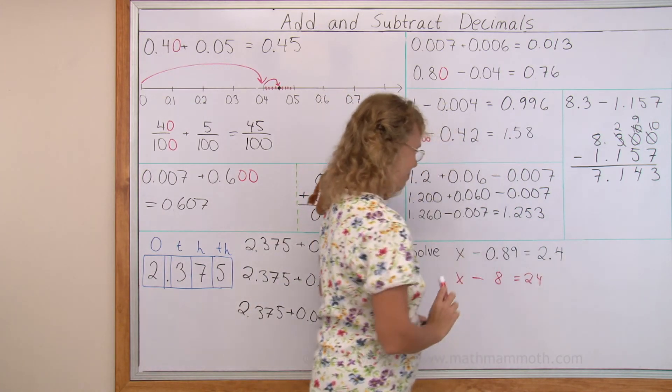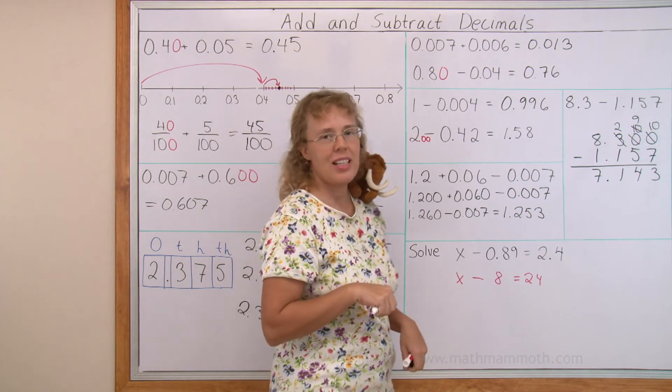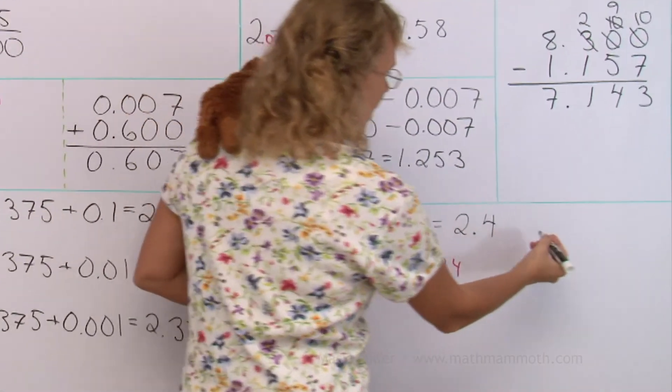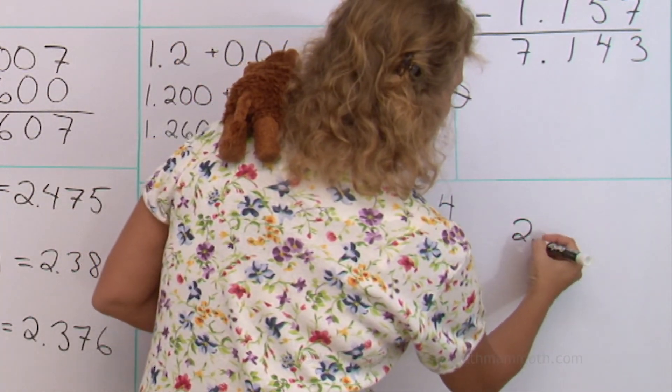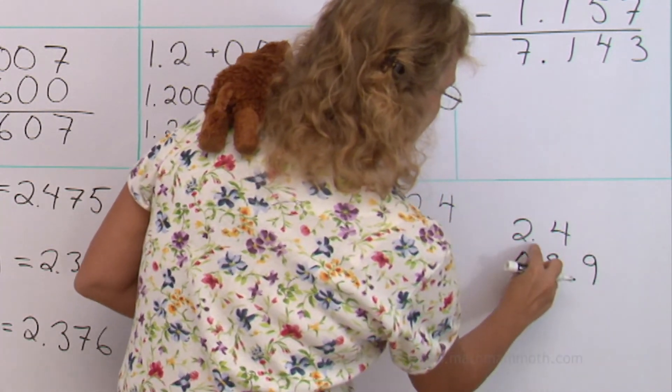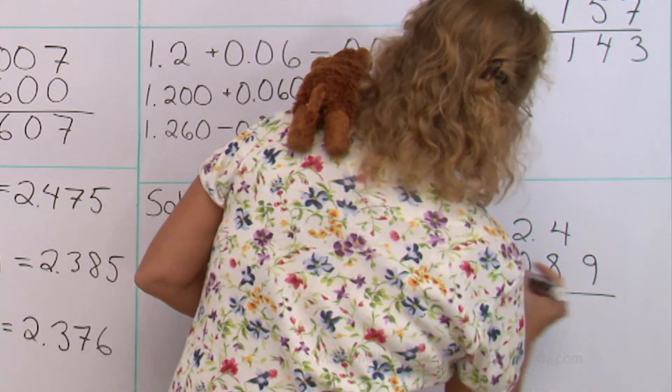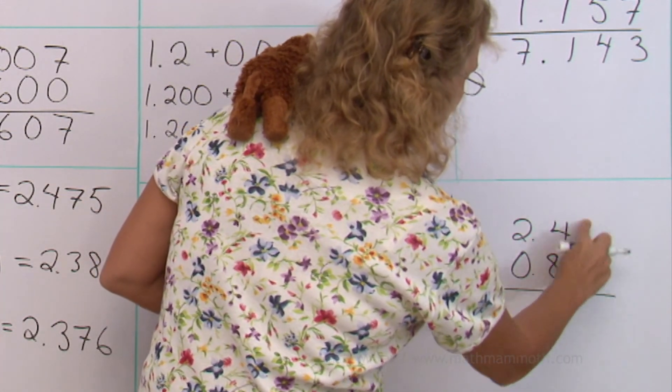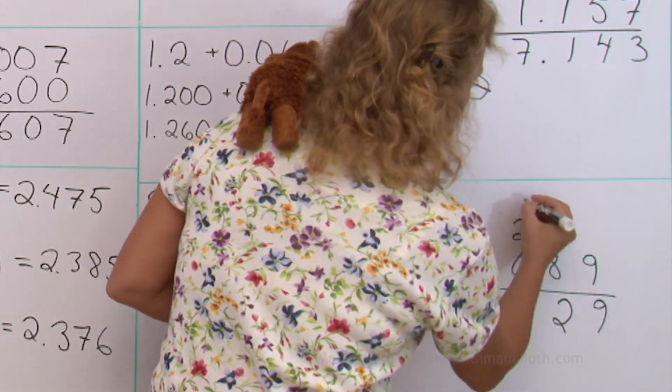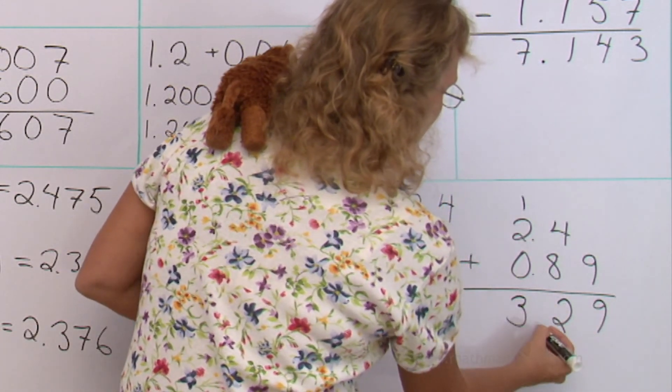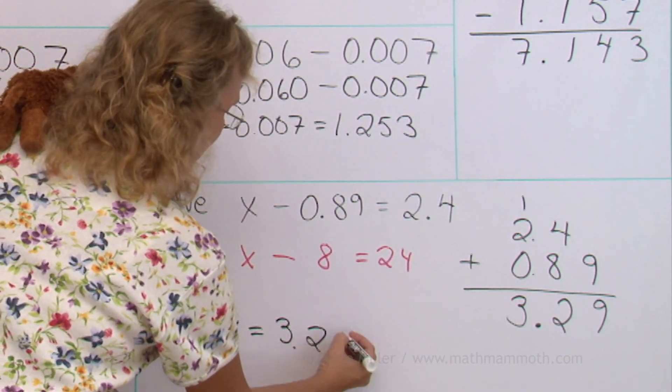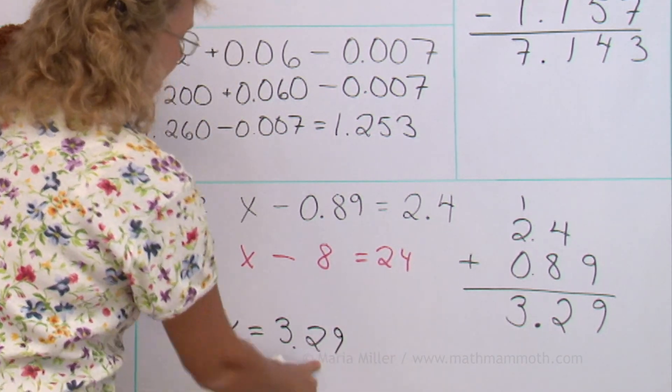And I'm going to now write the numbers under each other and add in columns. Over here we have 2.4, 0.89. Notice again aligning the decimal points. And then you can write a zero here if you want to but you don't have to. There's nothing plus 9 equals 9. Then 12 and then 3 and then the decimal point. So we get x equals 3.29 or 3 and 29 hundredths.